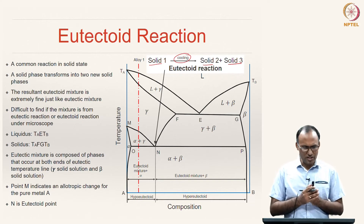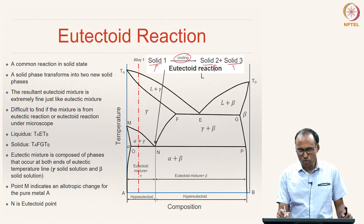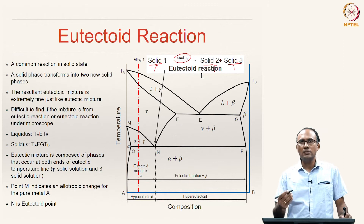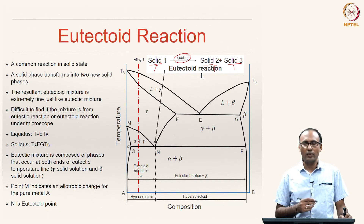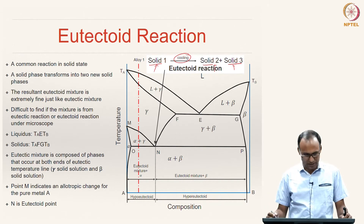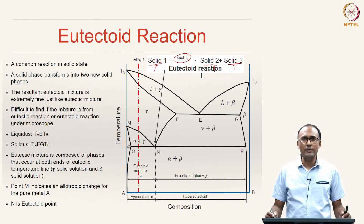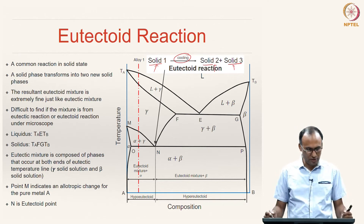The eutectoid reaction is a common reaction in the solid state where a single phase transforms to two new solid phases. Like the microstructure of a eutectic mixture, the eutectoid mixture under the microscope also looks like alternate layers of alpha and beta — making it difficult to distinguish whether a mixture came from a eutectic or eutectoid reaction, because their microstructures look very similar.